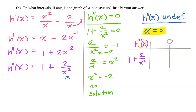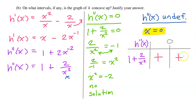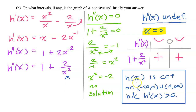Label the sign chart as pertaining to h double prime. Using a test value like x equals negative 2: squaring the denominator makes it positive, so the entire expression 1 plus 2/x² is positive. Picking a positive value also gives a positive result. So h double prime is positive in both intervals, meaning the original function h is concave up on both intervals — from negative infinity to 0 and from 0 to infinity — because h double prime is positive.